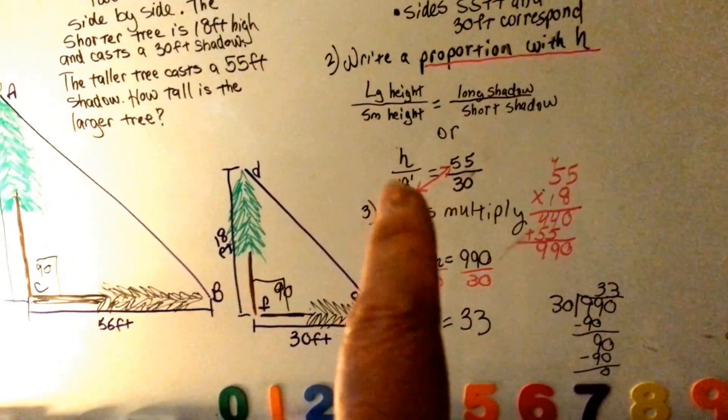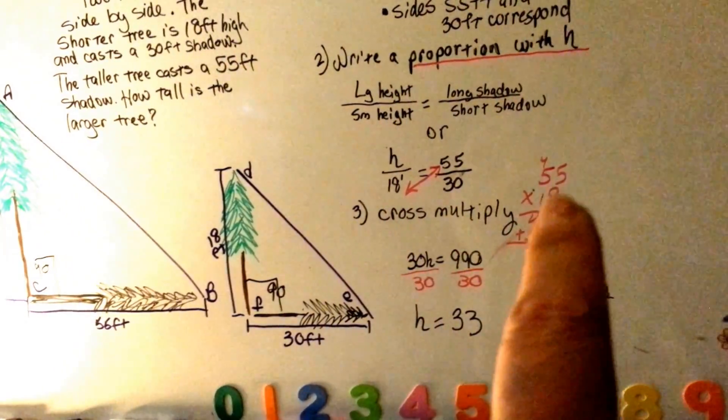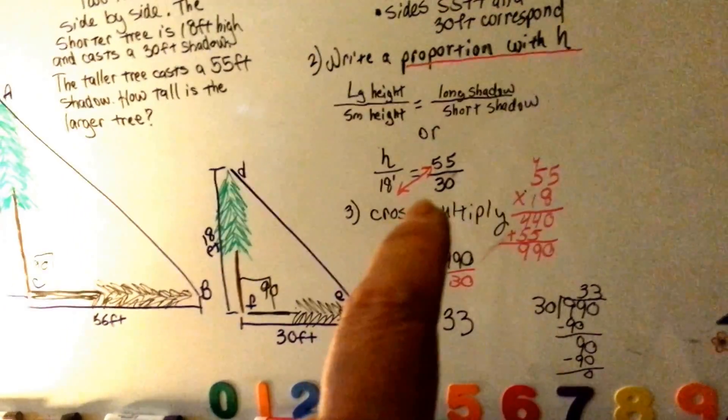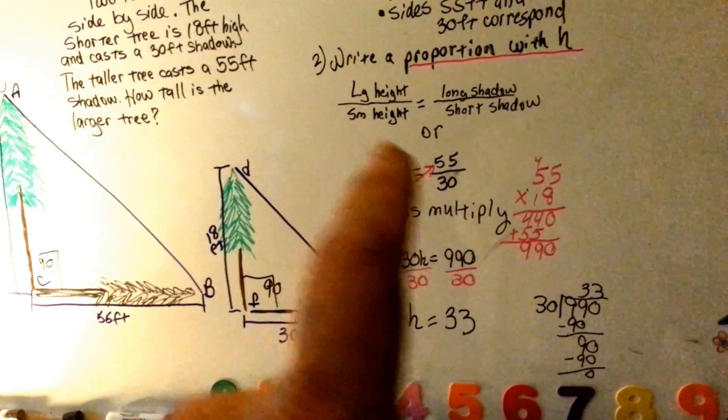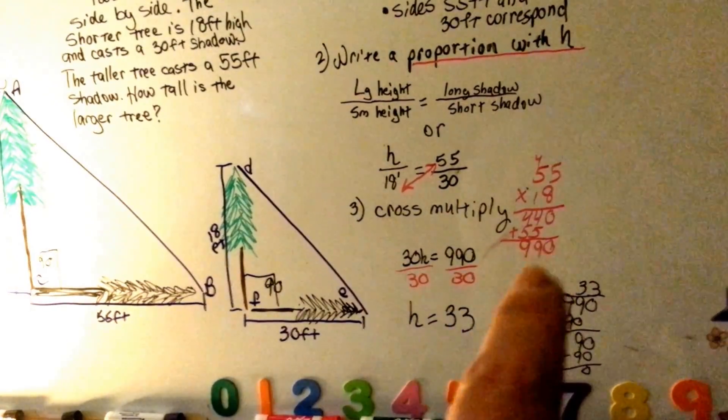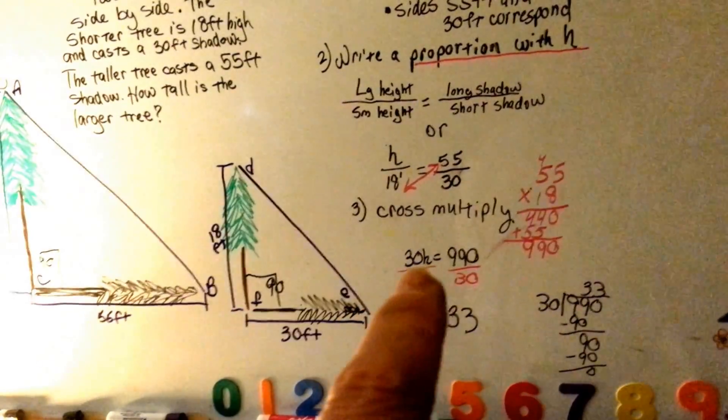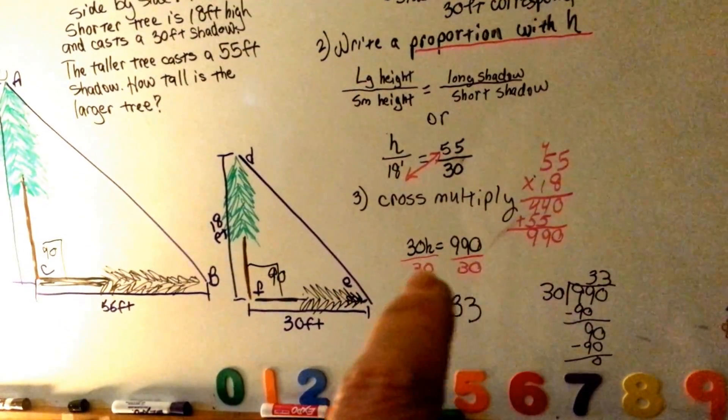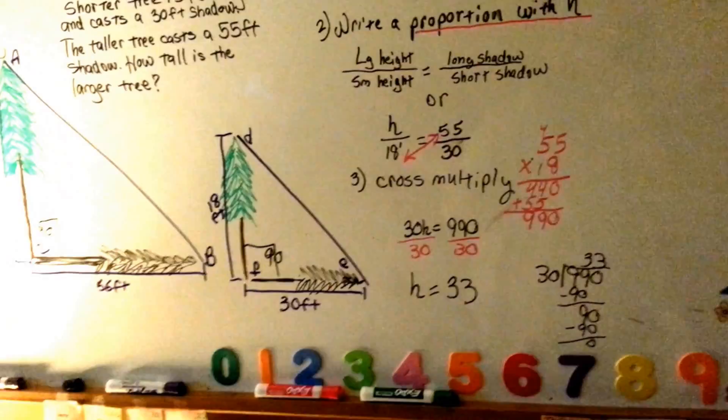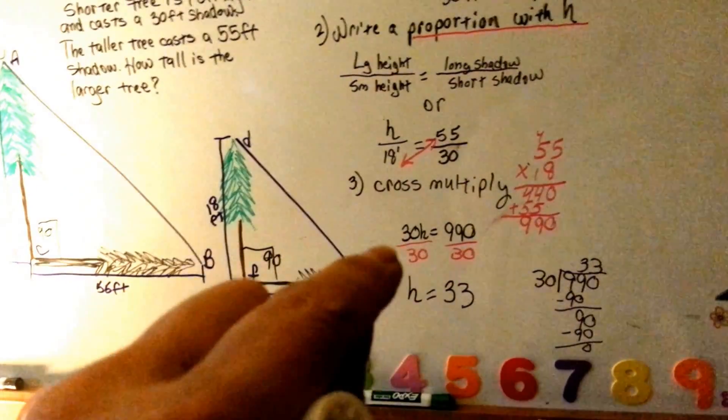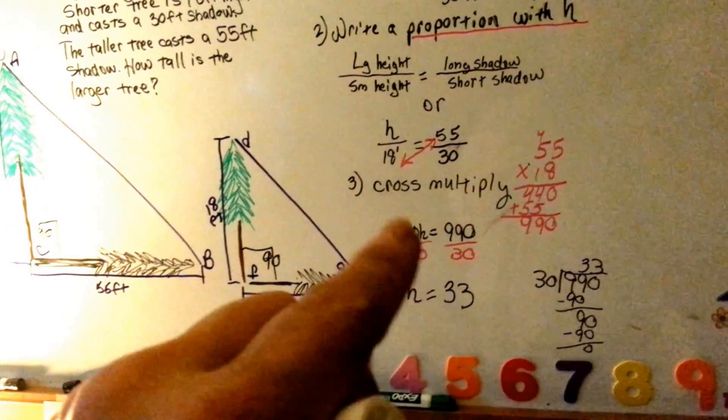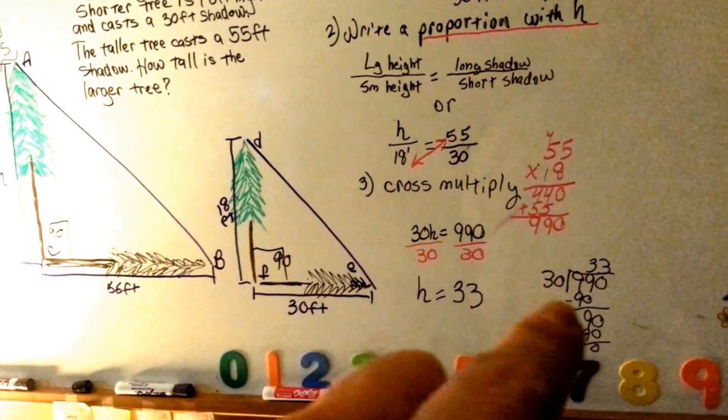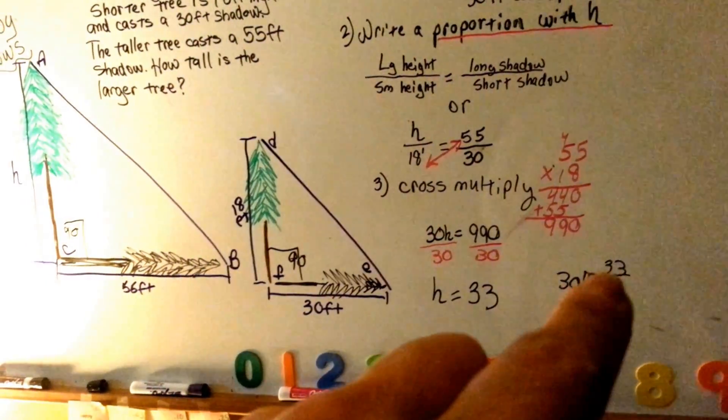So now we cross multiply. 18 times 55 is 990. So now whatever 30 times H is should be 990. So what we do is we write 30 times H equals 990, and then we divide by 30 on both sides to isolate the H like we did in our algebra videos. So 30 and 30 cancel each other out, and now we have H is equal to 990 divided by 30, which came out to 33.